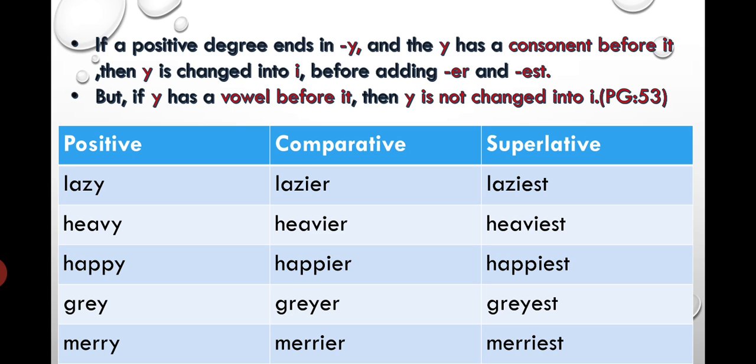But if your Y finishes with a vowel before it - if there is A, E, I, O, or U before the Y, like in grey, there is a vowel before Y - then we will not cut the word Y. Y will remain as it is. We will just add er or est behind it, like we added in the previous ones.